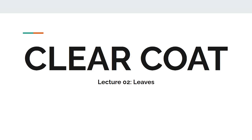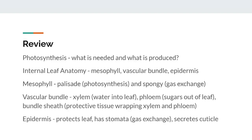Now let's get to the review. This slide focuses mainly on the internal anatomy of the leaf. We talked about photosynthesis — make sure you know what is needed for it to take place and what it produces. We talked about the three basic parts of the leaf cross-section: the mesophyll, vascular bundles, and the epidermis. The mesophyll is divided into the palisade mesophyll, which is responsible for the majority of photosynthesis, and the spongy mesophyll, which helps with gas exchange. The vascular bundles were made of xylem, which transports water into the leaf for photosynthesis; phloem, which transports sugars made from photosynthesis out of the leaf to the rest of the tree; and the bundle sheath, which protects the xylem and phloem. The epidermis protects the leaf and is covered in stomata, which exchange gases including carbon dioxide, oxygen, and water vapor through transpiration. The cells in the epidermis also secrete the waxy cuticle, which prevents water escaping through anywhere except the stomata.